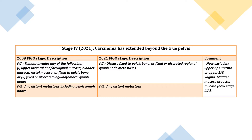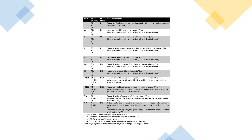All of this information is taken from BGCS guidance, which you should also be looking at for your oncology revision. Now, staging of uterine cancer. Stage 1 is tumour confined to the uterus. 1A is no or less than 50% myometrial invasion, with no spread to nearby lymph nodes or distant sites. 1B is invasion equal to or more than 50% of the myometrium, with no spread to nearby lymph nodes or distant sites. Stage 2 is tumour that invades the cervical stroma but has not spread beyond the uterus, with no spread to nearby lymph nodes or distant sites.